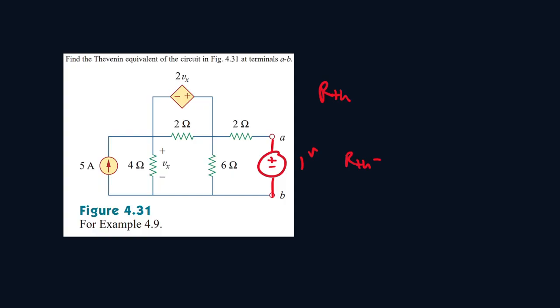So RTH will be equal to the voltage, which is 1, all over the current passing through it. So the current passing through it, it will be in this direction. And let's call it I0. So now let's do a mesh. So let's call this I1, I2, I3.